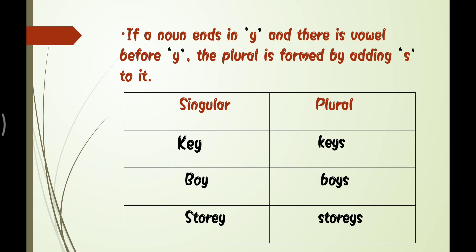If a noun ends in Y and there is a vowel before the Y, the plural is simply formed by adding S. So key becomes keys, boy becomes boys, and story becomes stories.